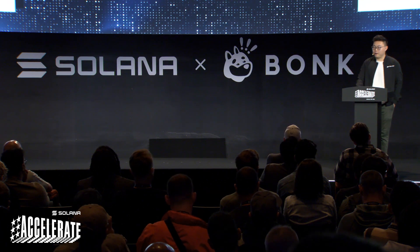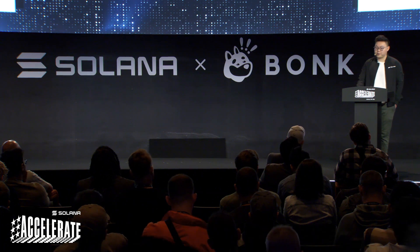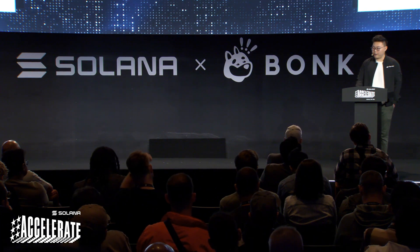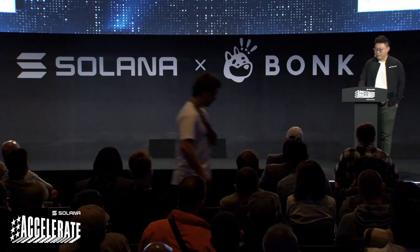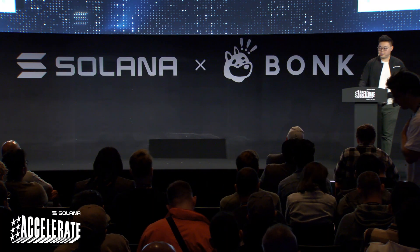The last way that Atlas scales the SVM is by scaling replication, via real-time state root calculation. Building a real-time state root is a complex software scaling task. The way we did it was by modifying the Atlas eBPF interpreter store operation to provide performance hints to the Atlas account hasher. The consequence is that we're able to produce a new complete hash of the full Atlas account state in under 50 milliseconds per update. The main benefit is that you reduce consistency risk across your different read replicas. In a complex system like Atlas or Solana, you need to make sure all your nodes are in sync.